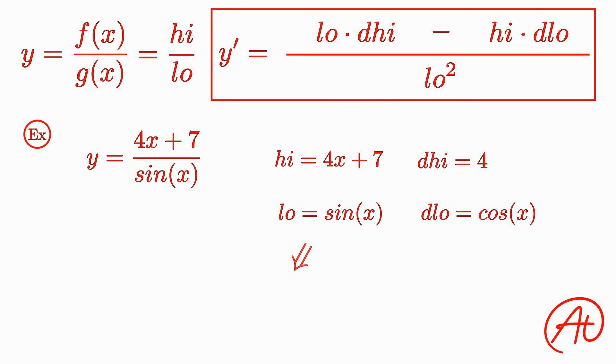Combining each of these parts, we get that y prime is equal to sine of x times 4 minus 4x plus 7 times cosine of x, all over sine of x squared.